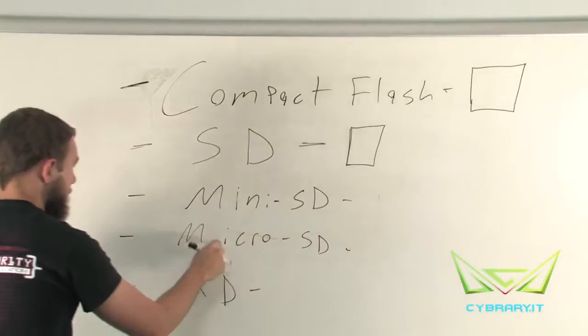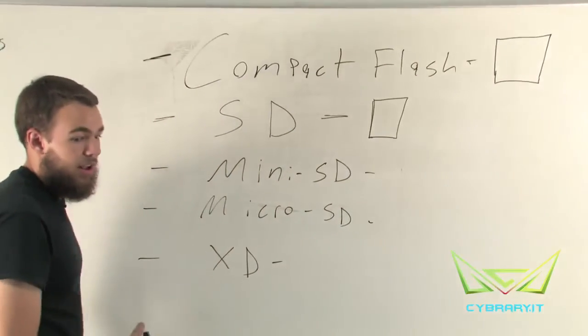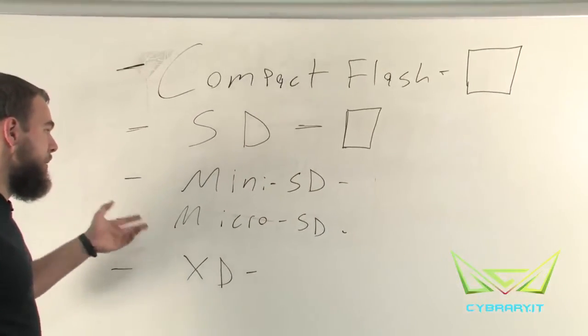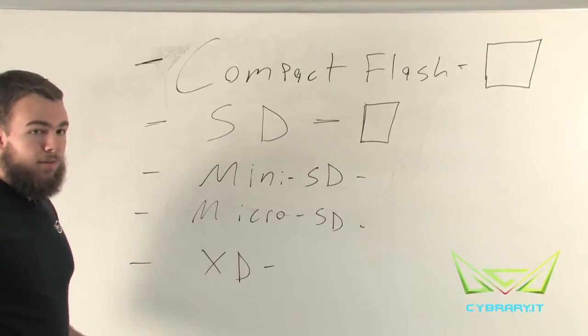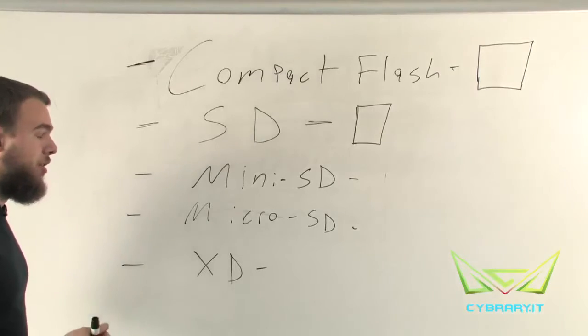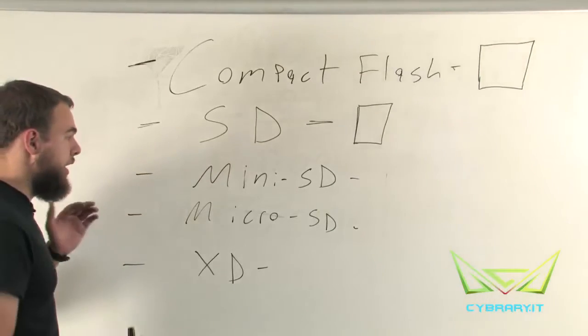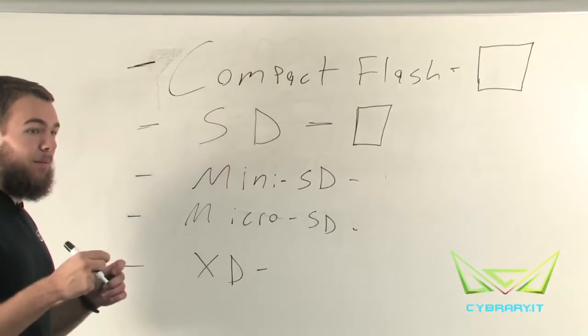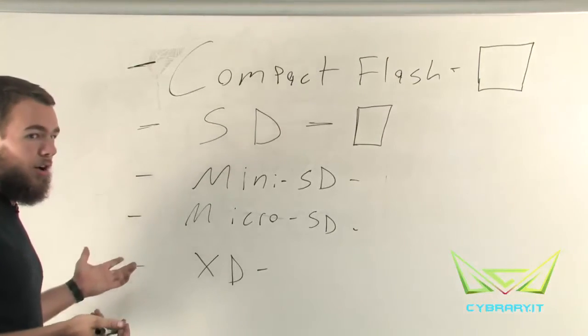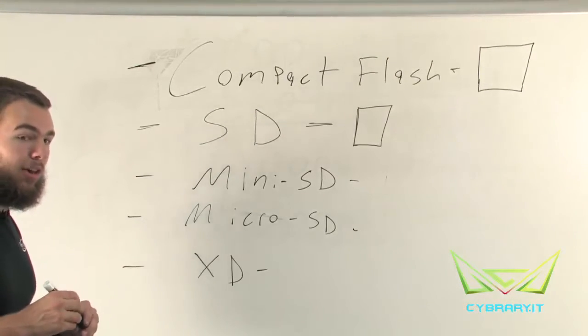And then, of course, mini and micro are going to be smaller than the standard SD. Now, you can get adapters for the mini and micro SD to be able to fit into a standard SD slot, which comes in very handy if you only have one slot on your computer that only fits SD. You can get those adapters that allow you to make it look like it's jumped up to regular SD card size, and it'll work in a regular SD port.